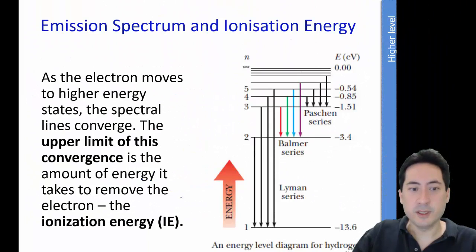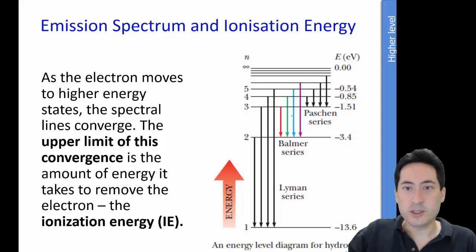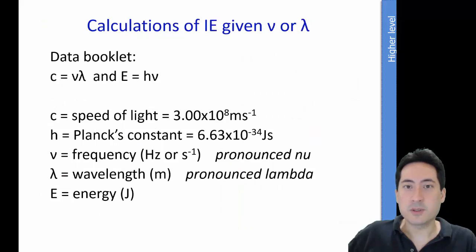As I mentioned in standard level, as you get more and more energy into this, the electron just eventually gets lost. And so the upper limit of convergence here is the place where the electron is lost. And so that's the ionization energy. So we can use this spectral graph to work out what the ionization energy is, going to our data booklet and using these formulas right here.